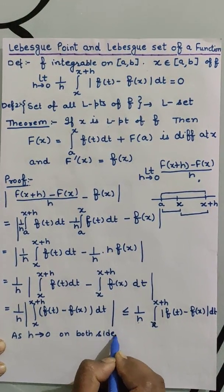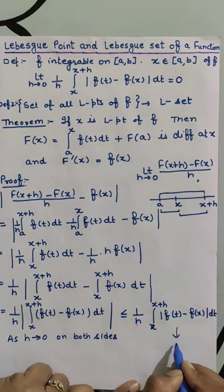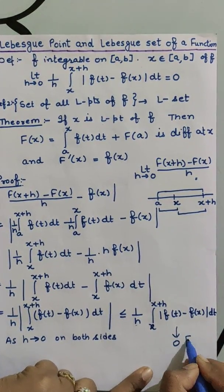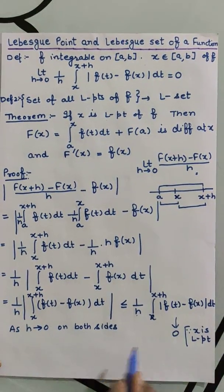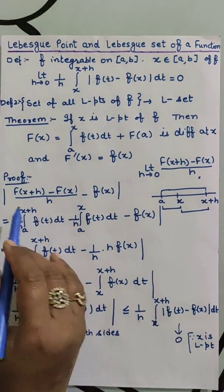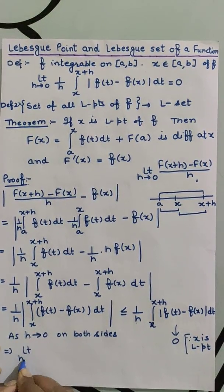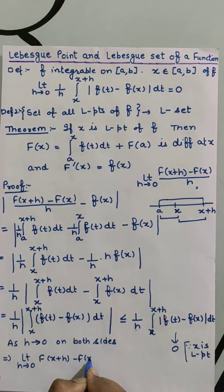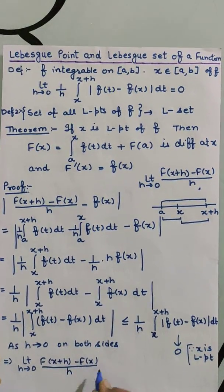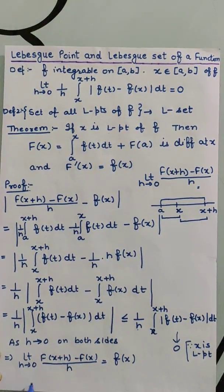we see that this term approaches to 0. Why? Because x is a Lebesgue point. If this thing approaches to 0, it means the whole expression approaches to 0, so this means that lim[h→0] [F(x+h) - F(x)]/h = f(x). What is this? This is nothing but